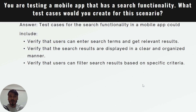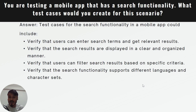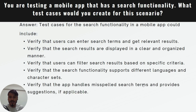For example, if you search for shoes in an e-commerce app, the results should be related to shoes only. The fourth point is to verify that the search functionality supports different languages and character sets. If the app supports localization, it should be able to search in different languages.